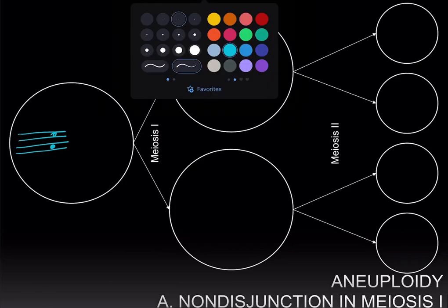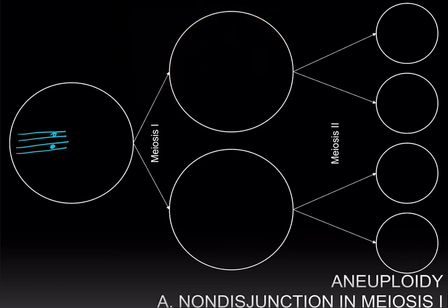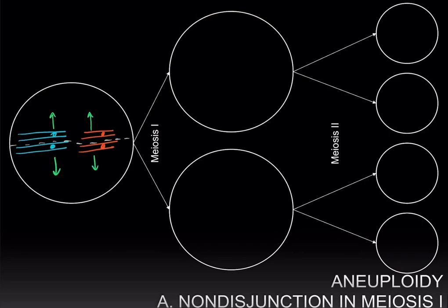Let's say we have a haploid number of two here just for simplicity, and the non-sister chromatids are synapsed or paired. Normally what would happen is during meiosis I, either non-sister chromatid will segregate to the two opposite sides, to opposite poles.